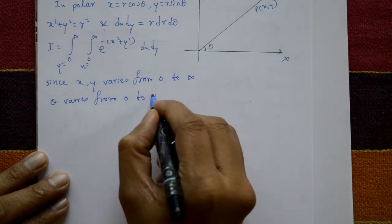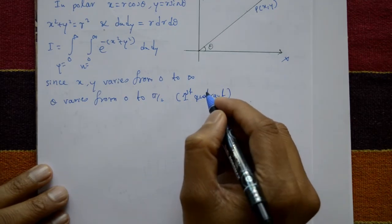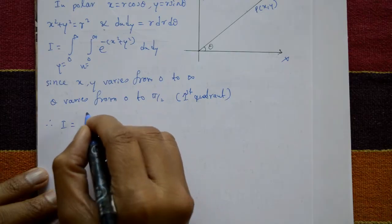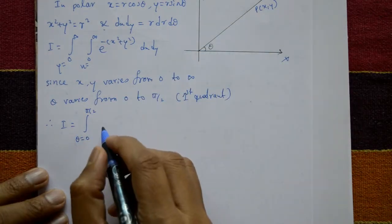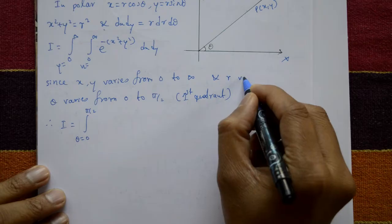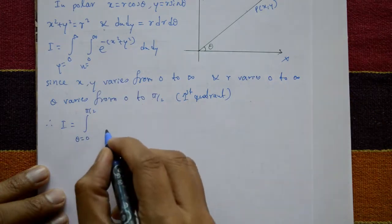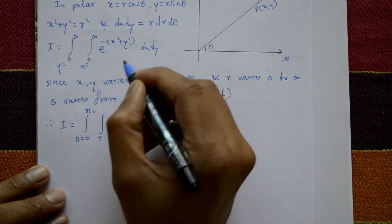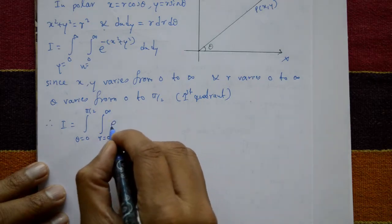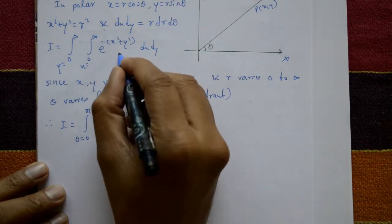In the first quadrant, theta varies from 0 to pi by two. Therefore, I equals integration with theta from 0 to pi by two, and r from 0 to infinity, of e to the power minus r square, multiplied by r dr d theta.